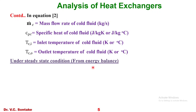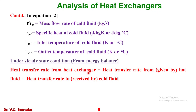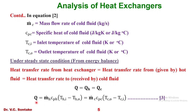Under steady state condition, the heat transfer rate given by the hot fluid and the heat transfer rate taken by the cold fluid will be the same. So, Q = Q_H = Q_C, meaning: Ṁ_H · C_PH · (T_HI − T_HO) = Ṁ_C · C_PC · (T_CO − T_CI). This is equation number 3 and is a very important relation obtained by energy balance under steady state heat transfer in a heat exchanger.